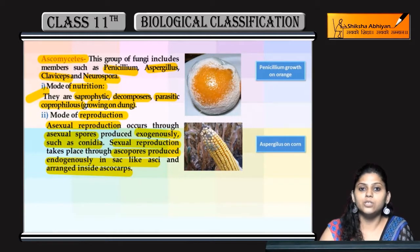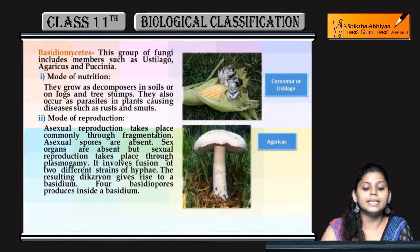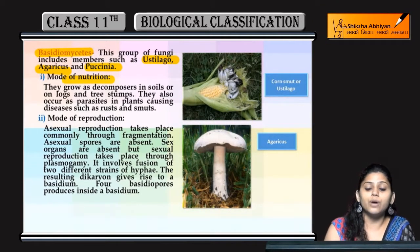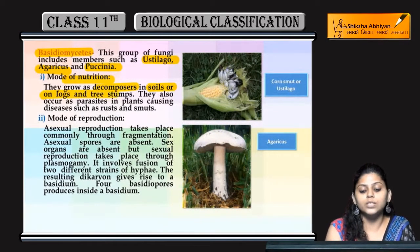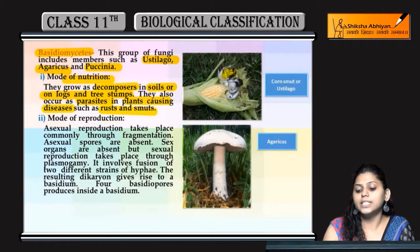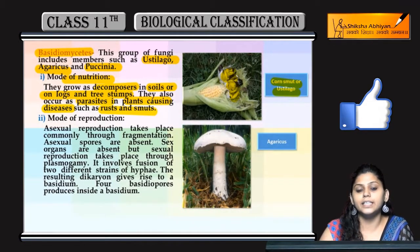Next Basidiomycetes ki baat karein — is mein aata hai Ustilago, Agaricus, and Puccinia. In ke mode of nutrition: they grow as decomposers in soil or on logs and tree stumps. Ye parasitic bhi hote hain — in plants cause karte hain kuch diseases like rusts and smuts. Yahan pe jo corn hai use Ustilago ne infect kiya hai.